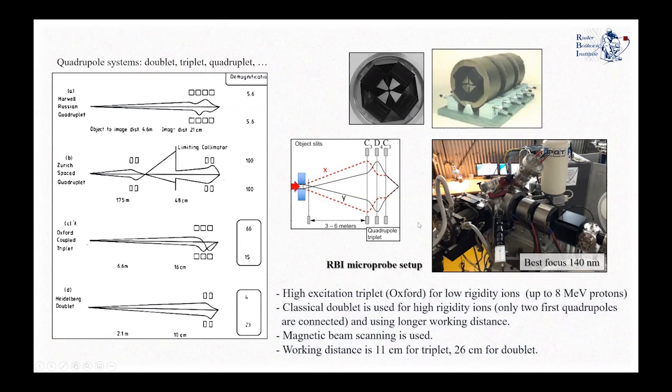You can see on this sketch on the right how the setup looks from above. The three quadrupoles are positioned on a holder which allows micrometer precision positioning of each quadrupole in X, Y, and Z, as well as tilt of each quadrupole, which is important to properly align each of them. We also use a magnetic scanner to move the beam when it's focused.